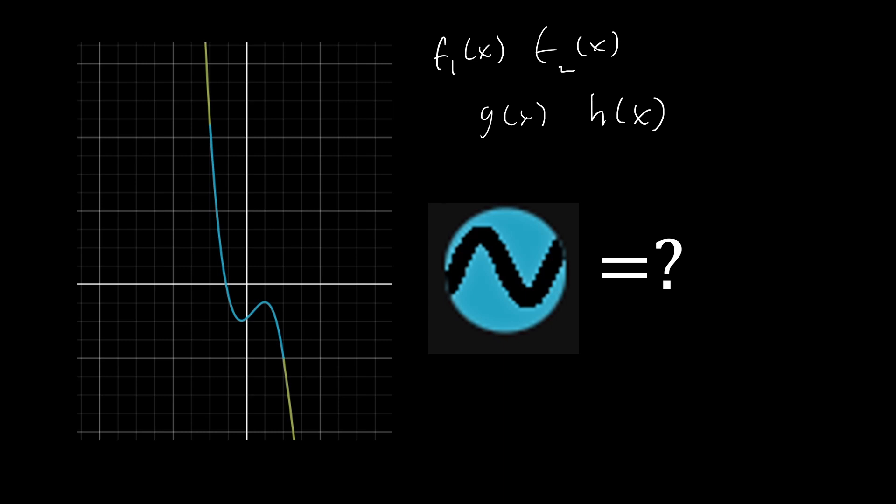In this video we're just going to look at how to connect functions from negative one to one, because that's a lot easier than connecting them at other places. But the strategies that we use in this video can definitely be expanded to connect any two functions, or even multiple functions, at any point in the graph. So let's go ahead and jump right into it.